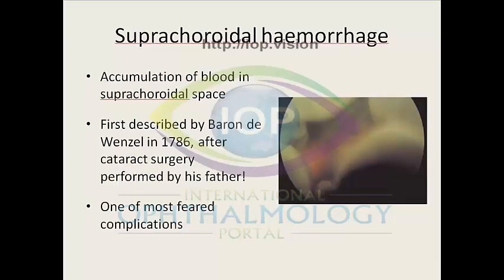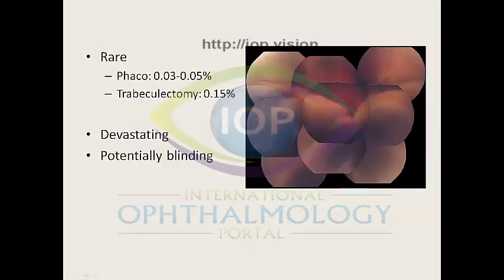Suprachoroidal haemorrhage is the accumulation of blood in the suprachoroidal space. It was first described by Baron de Wenzel in 1786 after cataract surgery performed by his father. Despite this long history, suprachoroidal haemorrhage remains one of the most feared complications of ophthalmic surgery. It is rare, however it is devastating and potentially blinding and painful.